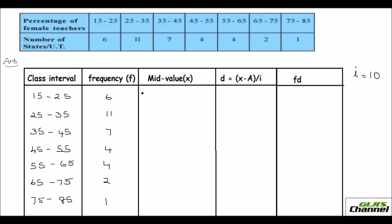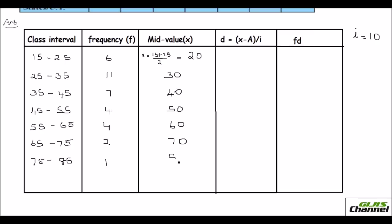Now let us find the mid value for each class interval. The mid value x equals (upper limit + lower limit) / 2. So for 15 to 25, it is (15 + 25) / 2 = 20. Then the mid values are 30, 40, 50, and so on. You calculate the mid value for all class intervals by adding upper and lower limits and dividing by 2.